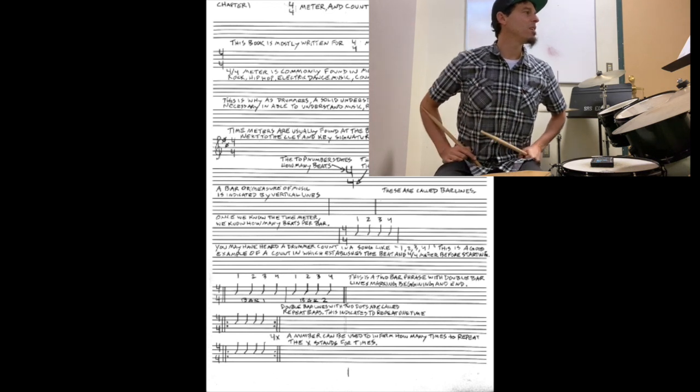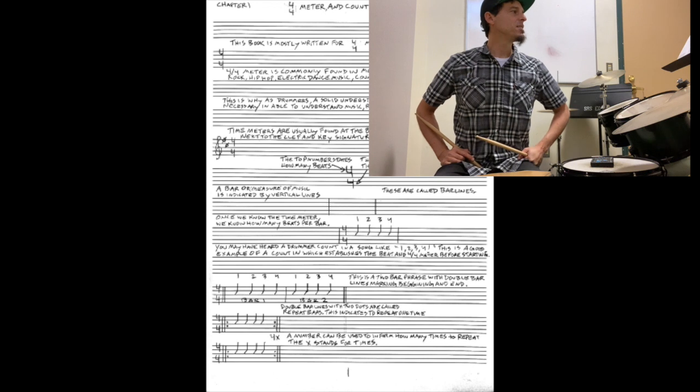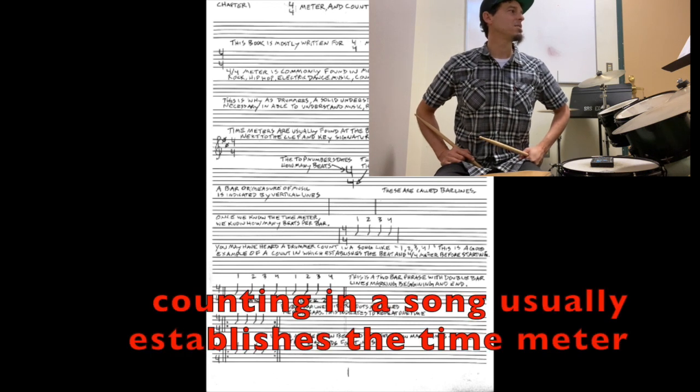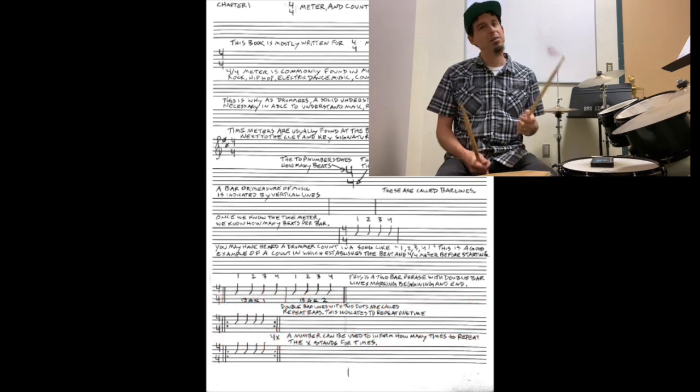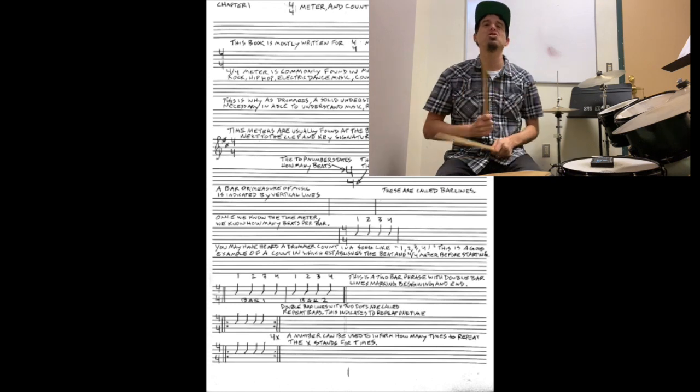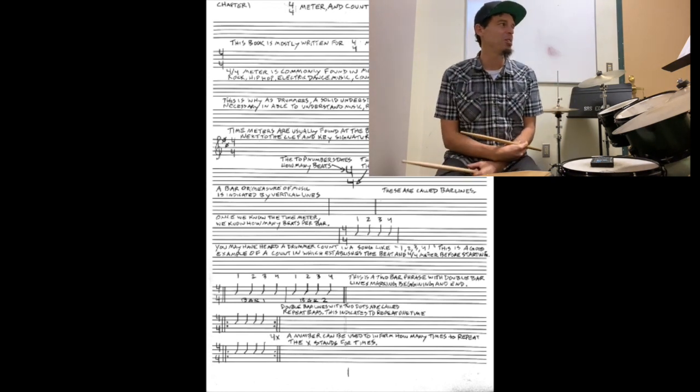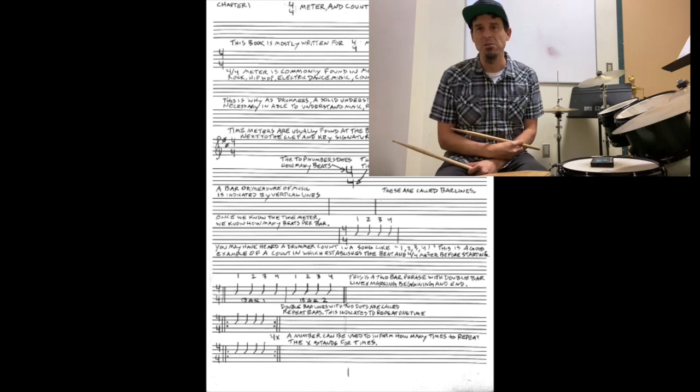Okay, now you may have heard a drummer count in a song like one, two, three, four. This is a good example of a count in which establishes the beat and 4-4 meter before starting. So super common, especially if you've seen a live band, drummer might go like one, two, three, four. Establishing the beat, establishing the tempo too, but that's a perfect example of 4-4 time right there.